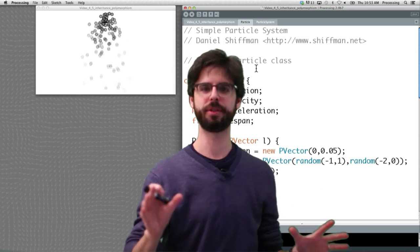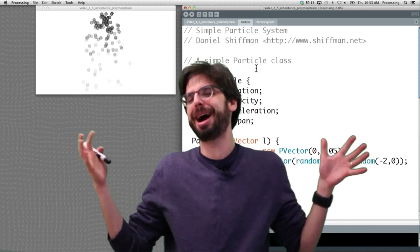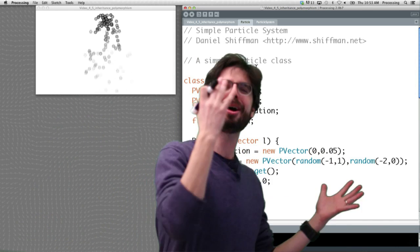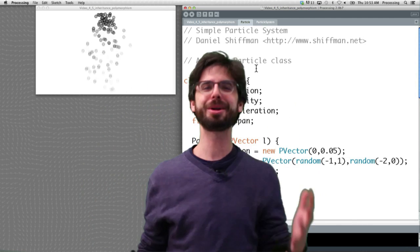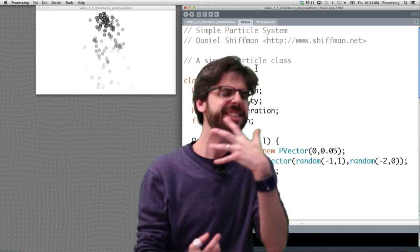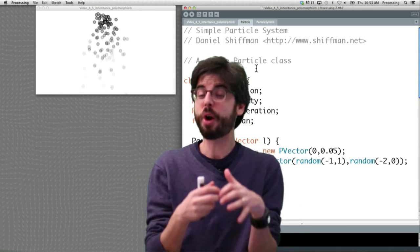What if, however, we wanted to make this particle system full of all different kinds of particles? Star particles and rainbow particles and twirly particles and blue particles. They all look different, they act different, but they're all basically the same. They're all in the same system.